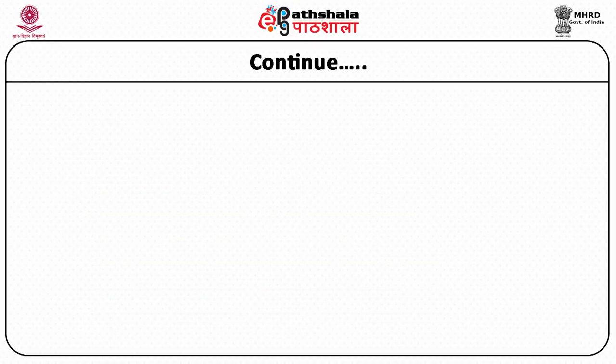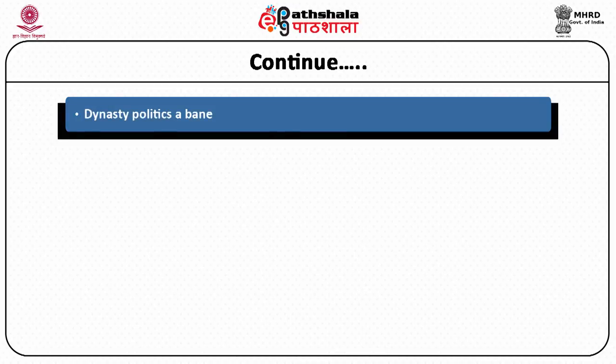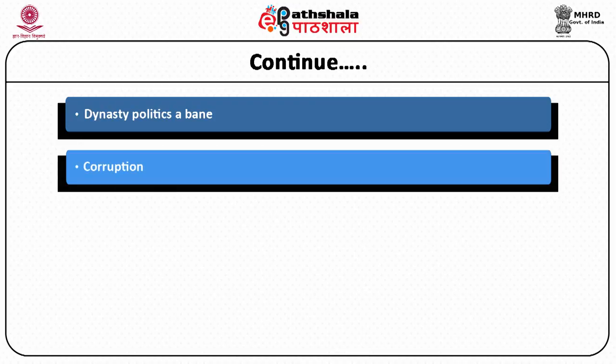There are many obstacles in the way of constitutionalism. Dynasty politics is one — there are about 28 to 29 families running the whole of India, for example. You have the Abdullahs in Kashmir, the Badals in Punjab, the Gandhi family in Delhi, the Scindias, the Pilots. Just a few families are running the whole show, which leads to a lot of hoarding of wealth, corruption — these are the banes in the way of constitutionalism.